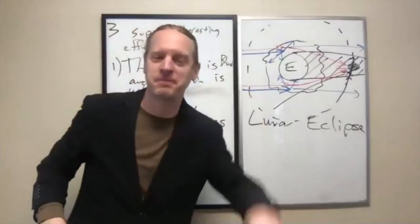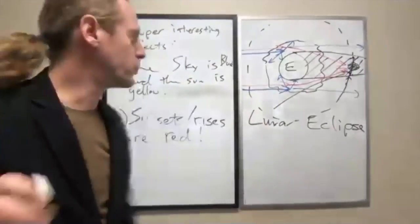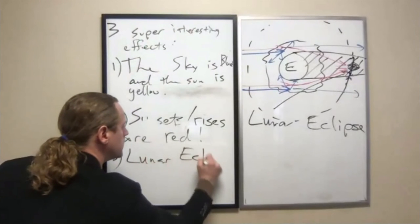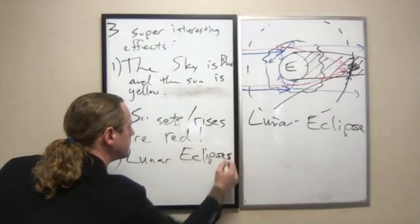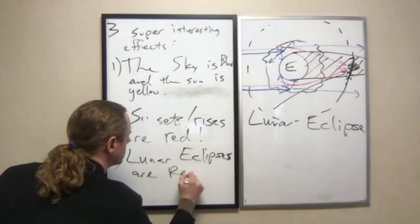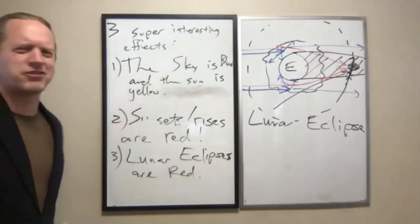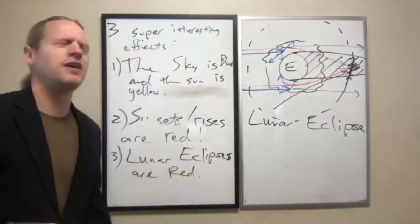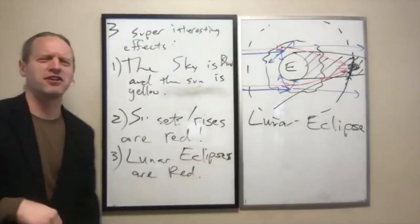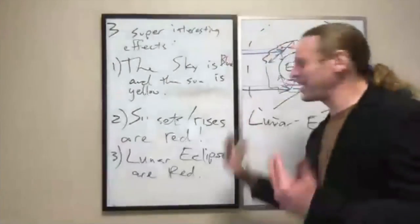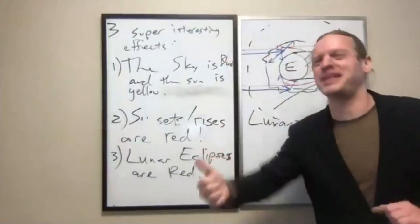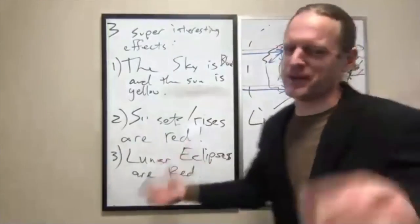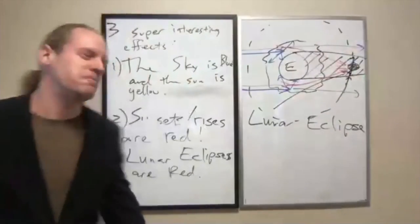So what have we just explained? Lunar eclipses are red. If you want to make it sound scary you can say it's a blood moon, but don't do that to an astronomer — they're just going to look at you like you're dumb. We describe them as total lunar eclipses, not a blood moon.